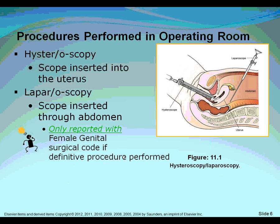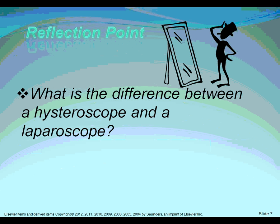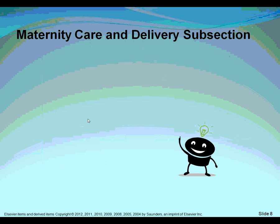An important note: laparoscopy is only reported with a female genital surgical code if a definitive procedure is performed. If it is done for diagnostic purposes only, then we just code for the diagnostic laparoscopy. When it converts to an actual procedure, we only code for the procedure rendered that day. The reflection point asks: what is the difference between a hysteroscope and a laparoscope? The hysteroscope views the uterus, and the laparoscope goes through the abdomen.